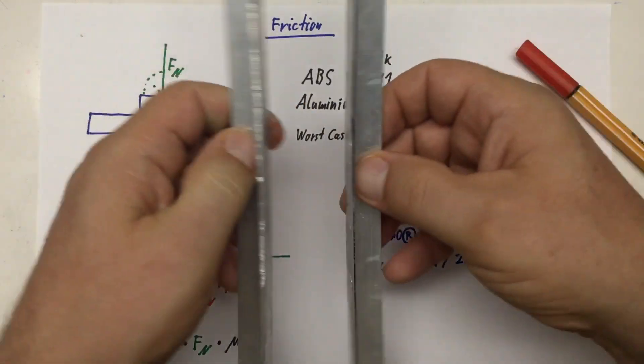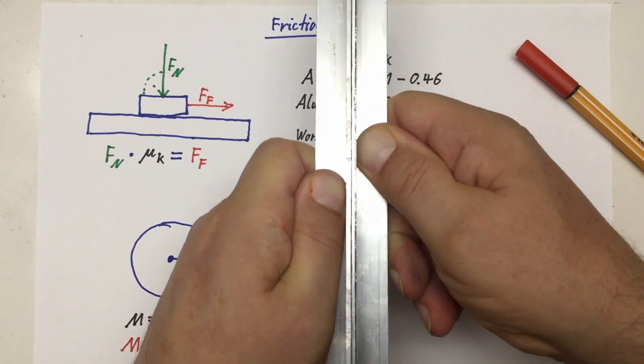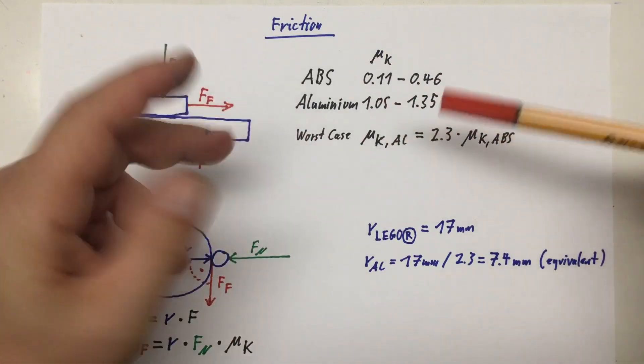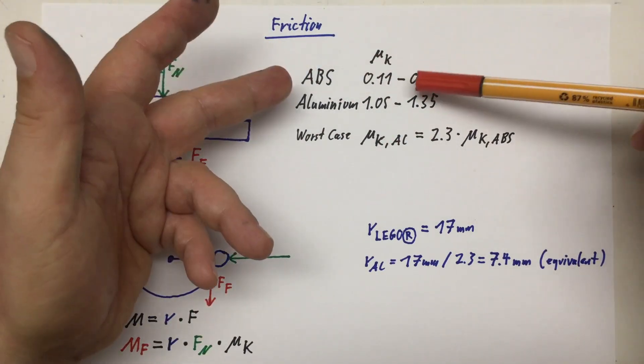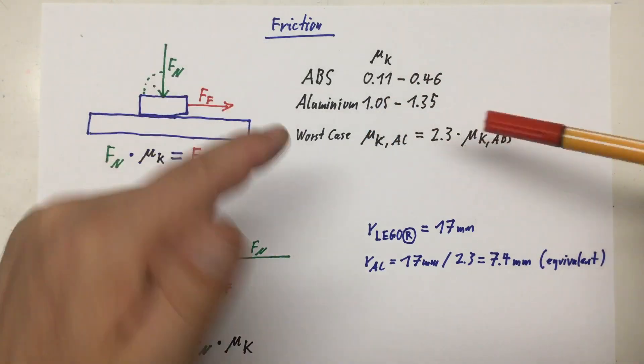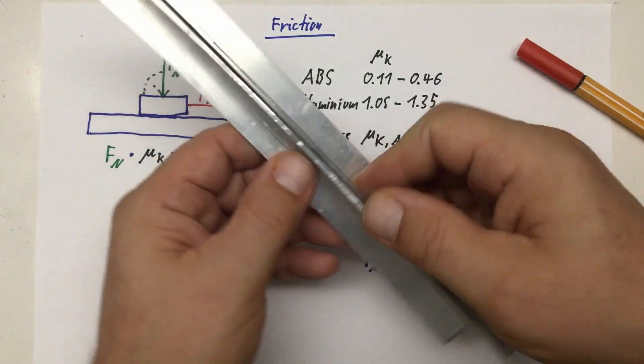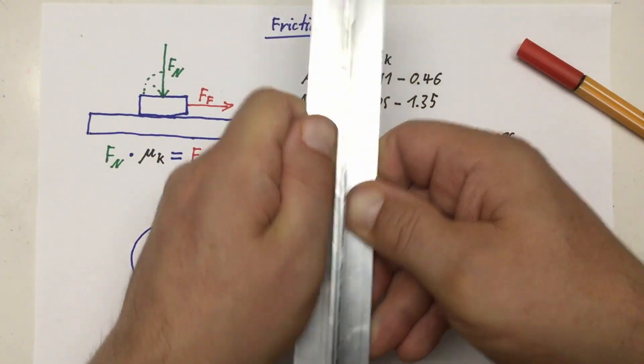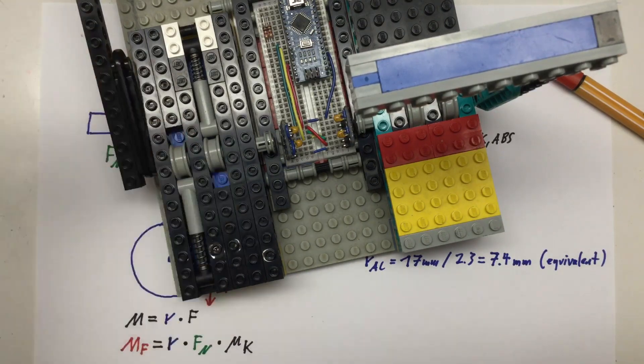Meaning if you press two aluminum part surfaces together with a given force, you need much more force here to slide them sideways. In fact, if we take these numbers and take the worst case - in my case, worst case scenario - so let's say an ABS μk of 0.46 and an aluminum μk of 1.35, then the aluminum μk is still 2.35 times larger than the μk of ABS. Meaning I get a whole lot more friction force here, or in the same construction, at least 2.35 times more friction force if I build all my friction parts out of aluminum.